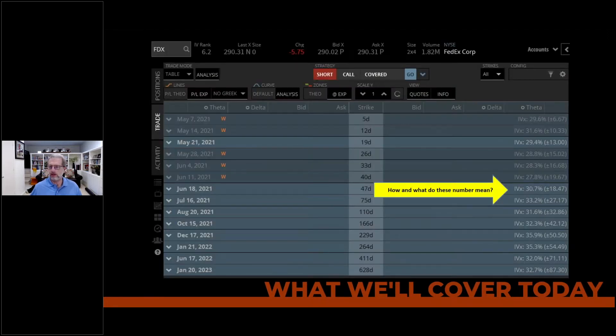So implied volatility. This is an option chain for Federal Express where I've got 47 days. The implied volatility is 30.7 and the expected move for that same period of time is 18.47 points. So when I first got started and even today, sometimes I have to go back and look at these definitions and figure out what are they, how do they work, what does it mean, how does it apply to me, why is it important to me?